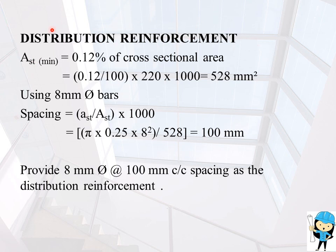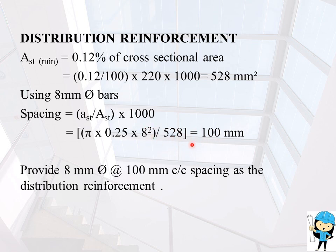For distribution reinforcement, AST minimum is provided. AST minimum equals 0.12% of cross-sectional area, so 0.12 divided by 100 into 220 into 1000, giving AST minimum = 528 mm². Using 8 mm diameter bars, spacing equals (π/4 × 8²) divided by 528 into 1000, giving 100 mm. Provide 8 mm dia bars at 100 mm center-to-center as distribution reinforcement.